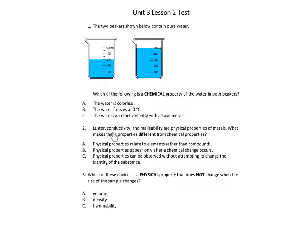Number 2. Luster, conductivity, and malleability are physical properties of metals. What makes these properties different from chemical properties? A. Physical properties relate to the elements rather than compounds. B. Physical properties appear only after a chemical change occurs. C. Physical properties can be observed without attempting to change the identity of the substance.